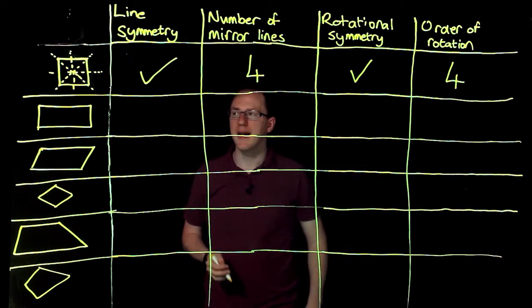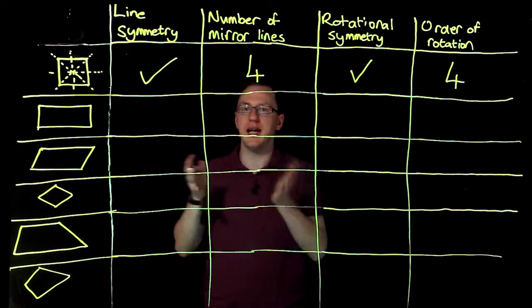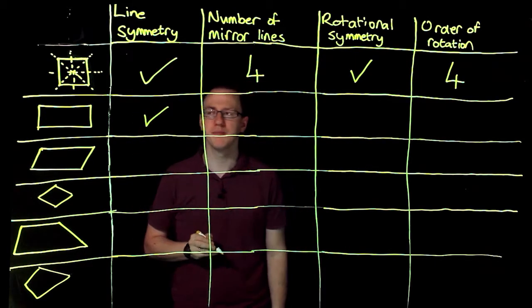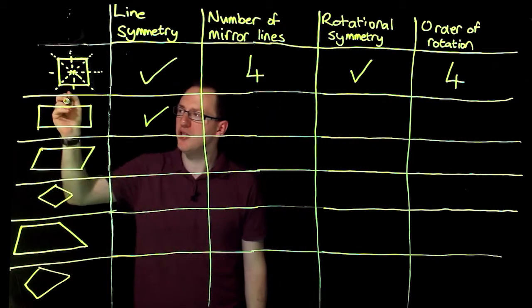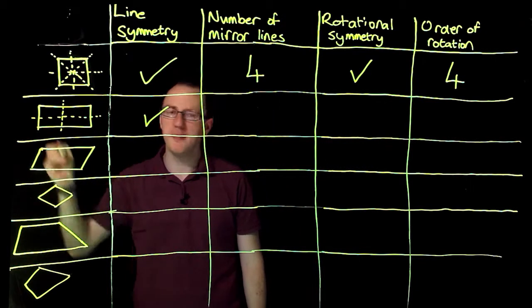Now I'm going to think about my rectangle. Again, my rectangle, I can fold it in half, and so it does have line symmetry. And it has two line symmetries. We've got one mirror line here and one mirror line here.